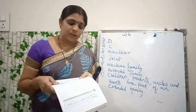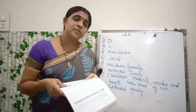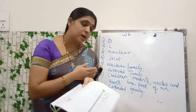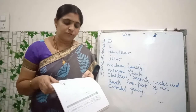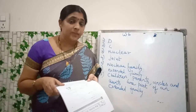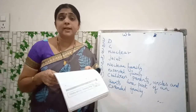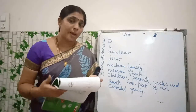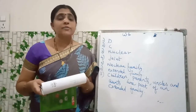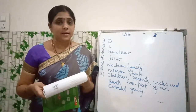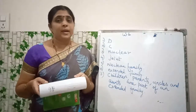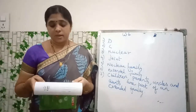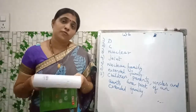Name the type of family shown in the picture — see that picture and say the answer. Nuclear family. In which type of family do we find cousins, children? In the extended family. Name the family members who are part of an extended family: children, parents, grandparents, uncles, aunts and cousins are part of an extended family.